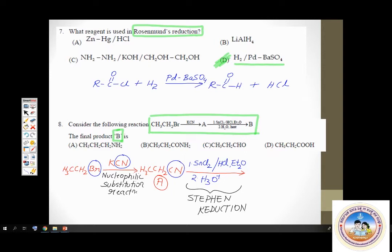The CN group (nitrile) is changed into CHO (aldehyde). So this is the final product B — CH3CH2CHO, which is propanal. Checking the options: option A is an amide — ruled out. Option B is also an amide — ruled out. Option C is an aldehyde — that is our correct answer. Option D is a carboxylic acid — also ruled out. That was question number 8.